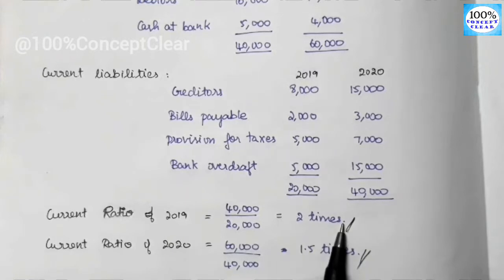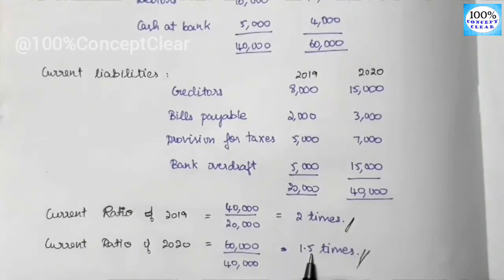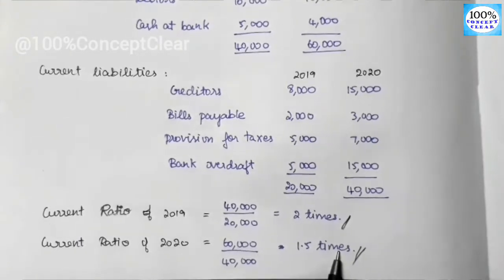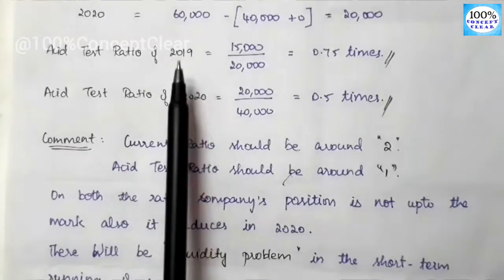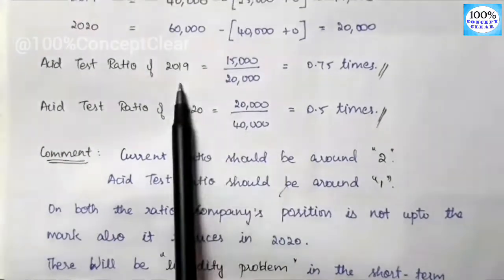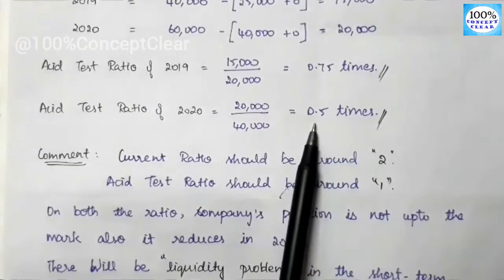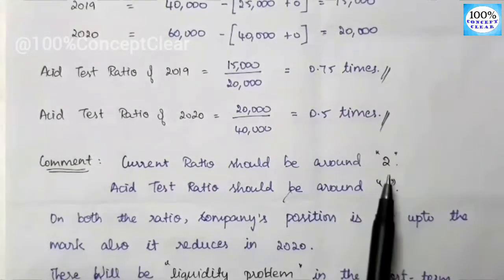In 2019, the liquidity position is correct. In 2020, the current ratio is reduced to 1.5. The standard norm is 2. So comparing both years, the ratio has declined from 2019 to 2020.